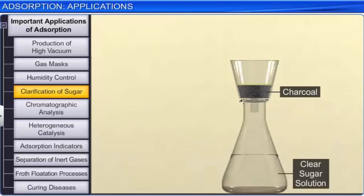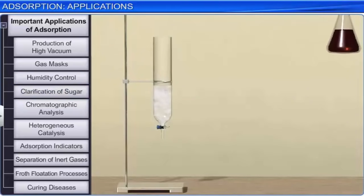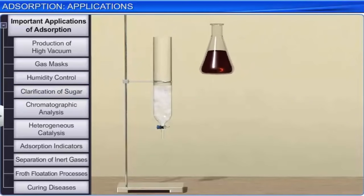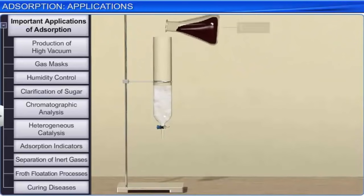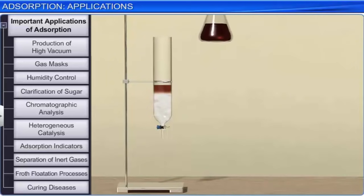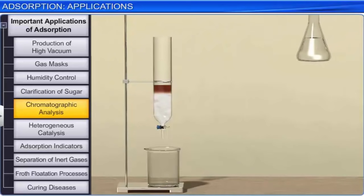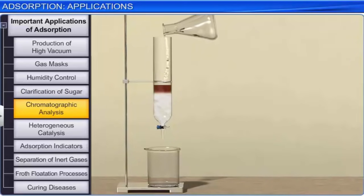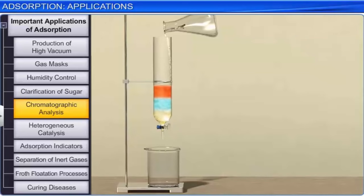An application of adsorption from solutions is the clarification of sugar: animal charcoal is used to decolorize sugar solution since it adsorbs the coloring materials and carries them when separated from the solution, leaving behind a clear solution. The phenomenon of adsorption has also provided chemists with the technique of chromatographic analysis, which is used widely in analytical and industrial fields and is based on the selective adsorption of certain substances from a solution by a particular solid adsorbent.